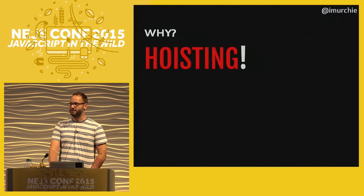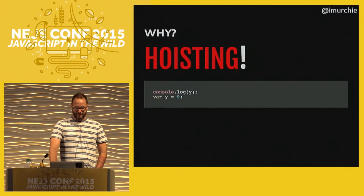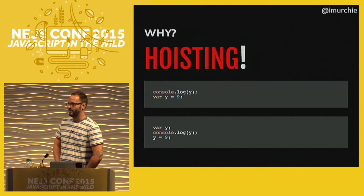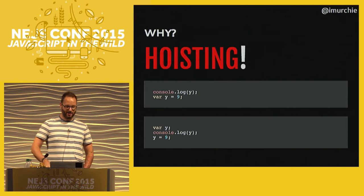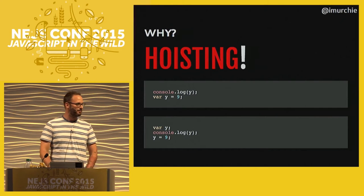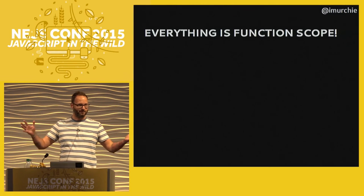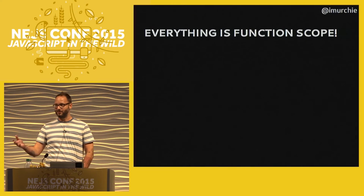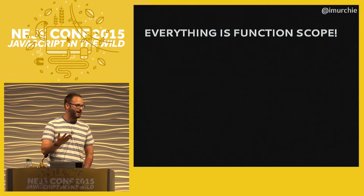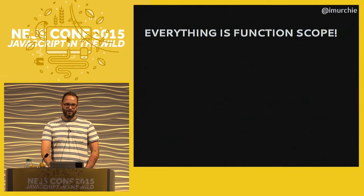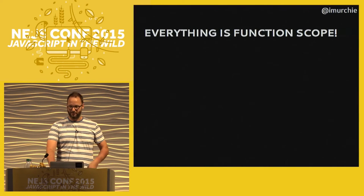Why does this happen? Because of hoisting. The spec says this is functionally equivalent to taking all the variables and moving them up to the top of the function, pretending they were declared there, and initializing them whenever you actually declared them the first time. Everything is function-scoped — if blocks, for loops, these sorts of things are all in the containing function scope.